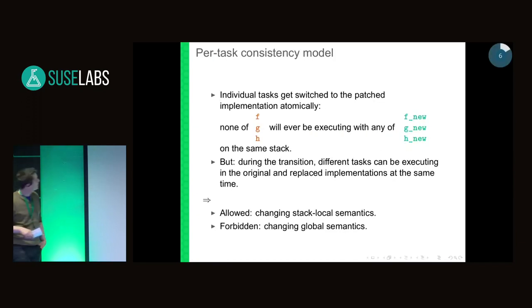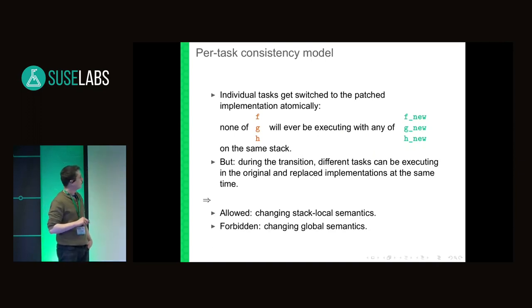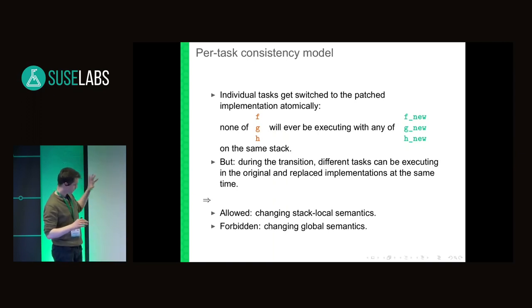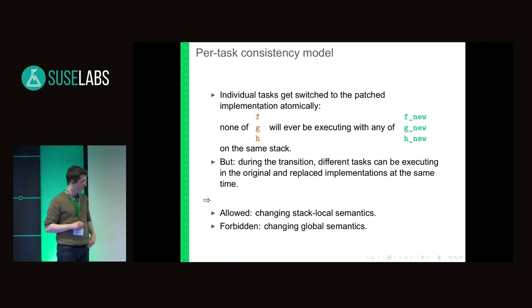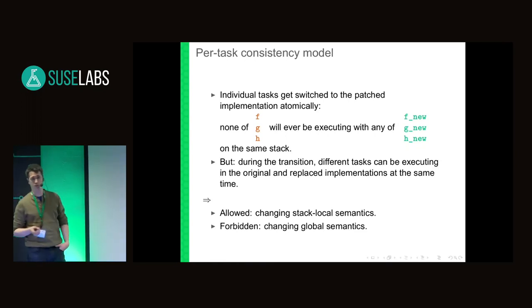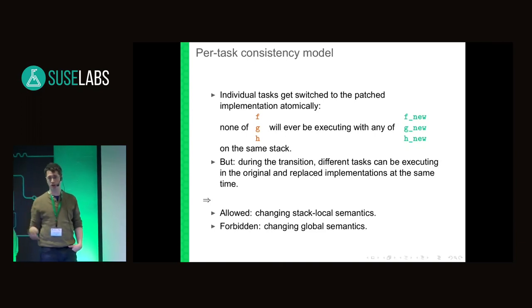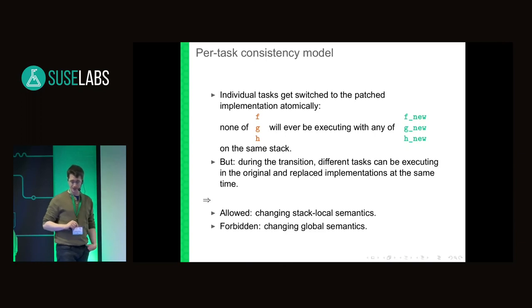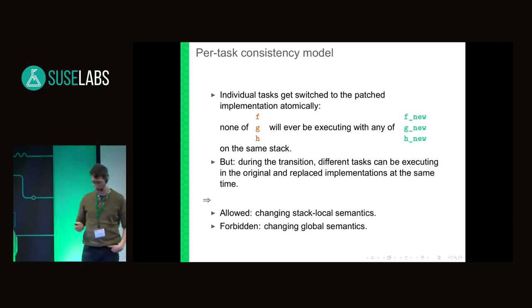The consequence is that you'll never find any of the old functions executing together with any of the live-patch replacements on the same stack. But because tasks transition one by one, there can be tasks in the old universe simultaneously executing with tasks in the new universe. For live patches, this means it's allowed to change stack-local semantics like changing function prototypes or moving locking up or down the call chain, but what is forbidden is changing global semantics — for example, inverting locking order.